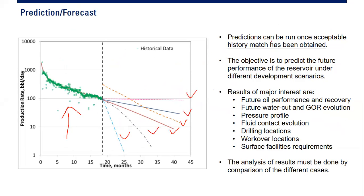Predictions can be run once an acceptable history match has been obtained. The objective is to predict the future performance of the reservoir under different development scenarios. Results of major interest are future oil production, future oil recovery, future water cut, future GOR, pressure profile, fluid contact evolution, drilling location, workover location, and surface facility requirements.